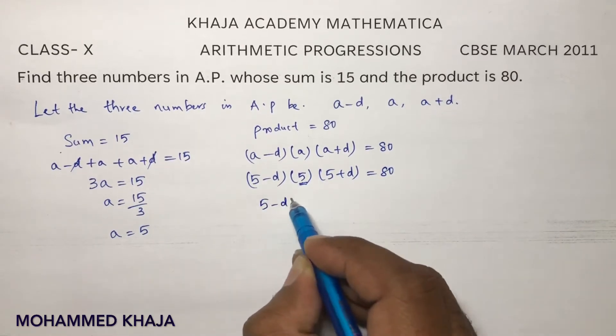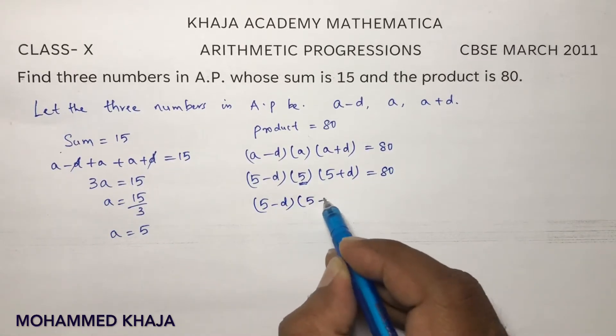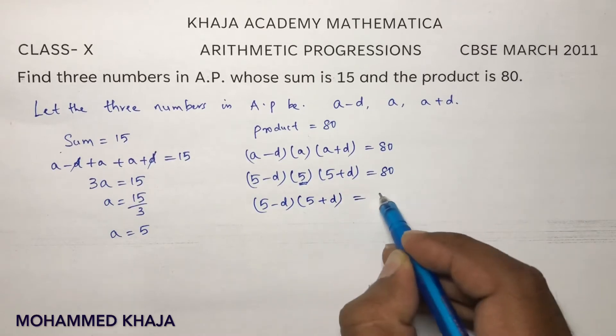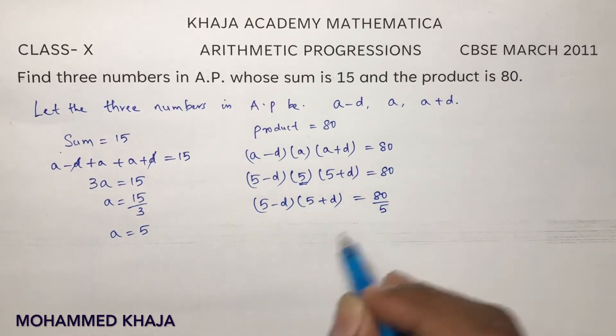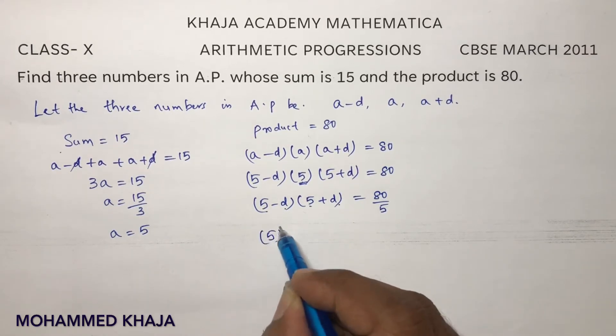So this 5, if I will transpose, so here I will be left with 5 minus D into 5 plus D equals 80 by 5. So it is in the form of A minus B into A plus B, so A square minus B square.